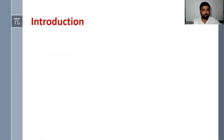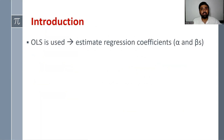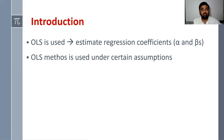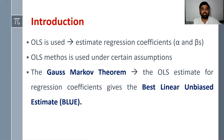Let's begin with the introduction. The ordinary least square method is used to estimate the regression coefficients alpha and beta, as discussed in our earlier videos. OLS method is used under certain assumptions, and the Gauss-Markov theorem says that the OLS estimates for regression coefficients give the best linear unbiased estimator. So OLS estimators are BLUE.